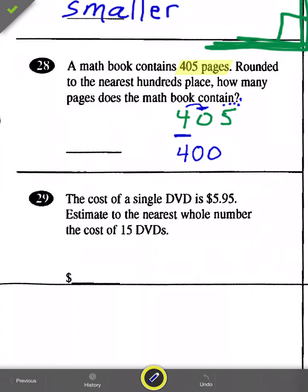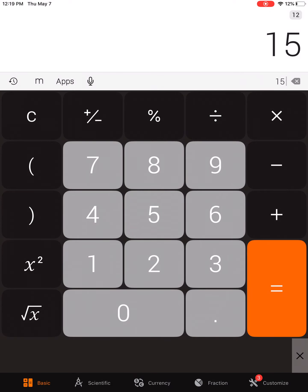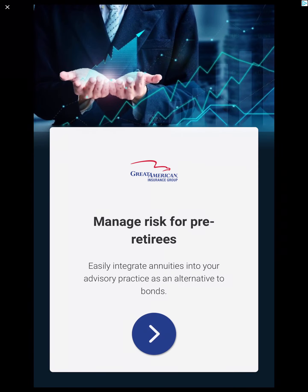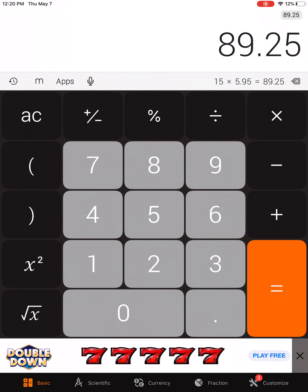Alright. Now all good things must come to an end and apparently at the end here, number 29, the cost of a single DVD is $5.95. I highlight that cause that's probably going to be important and probably need that to solve the problem. Estimate to the nearest whole number the cost of 15 DVDs. Oh my word, 15 of these things. Alright, so let's do this. Let's get a calculator and multiply 15 times 5.95. Don't forget that decimal point and you get $89.25.